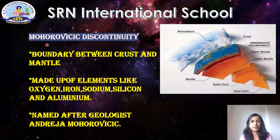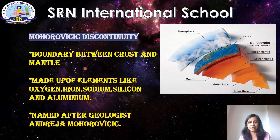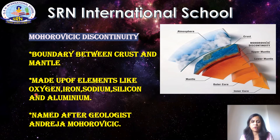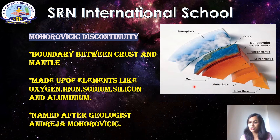Now let us discuss the Mohorovičić discontinuity. The Mohorovičić discontinuity is a boundary that exists between the crust and the mantle, at around 10 to 12 kilometers depth. It is made up of a variety of elements including oxygen, iron, sodium, silicon, and aluminum. This boundary was named after the geologist Andrija Mohorovičić.